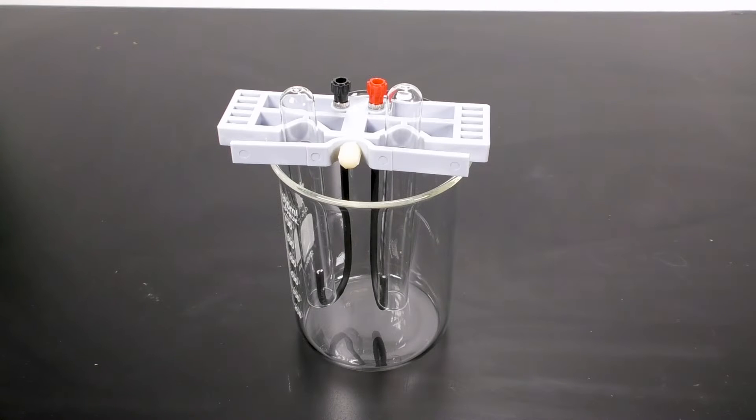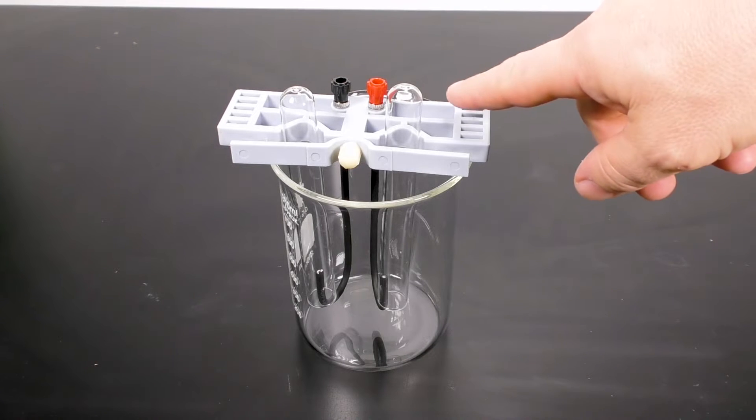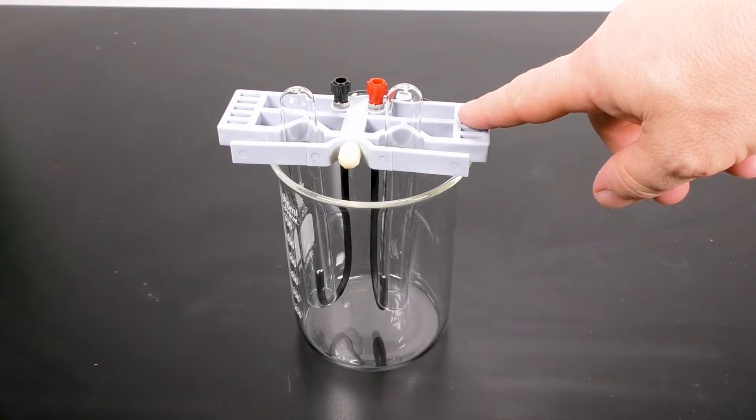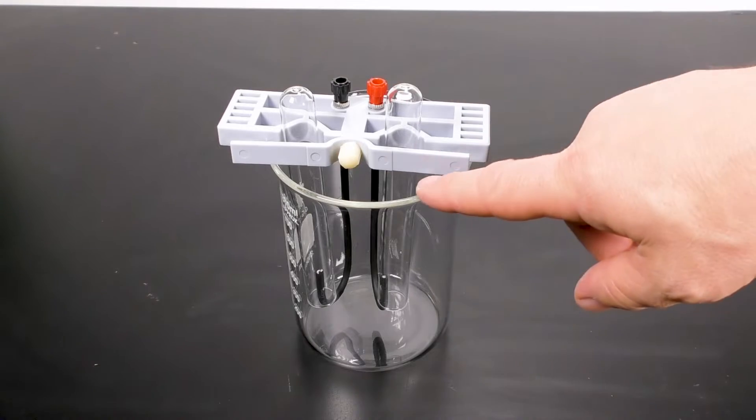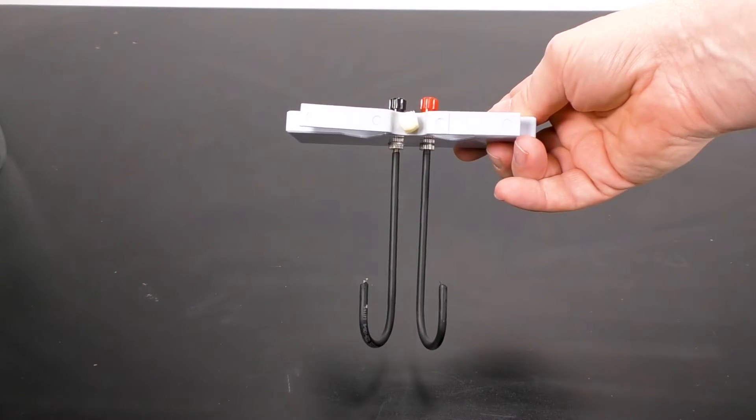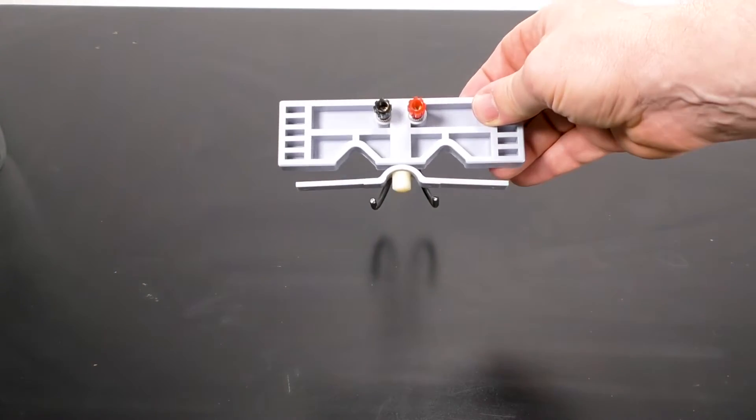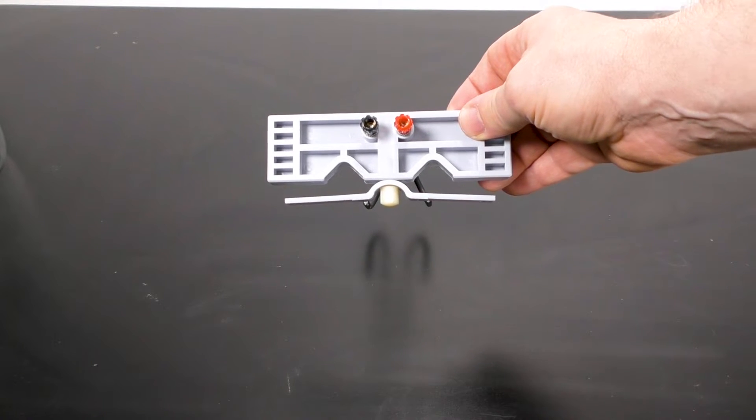This simple and easy to use setup demonstrates the electrolysis of water. The non-conductive support holds two test tubes that straddles a beaker. The platinum electrodes are attached to insulating connecting rods with mounting posts.